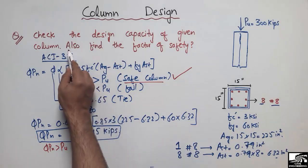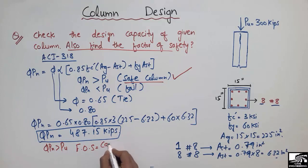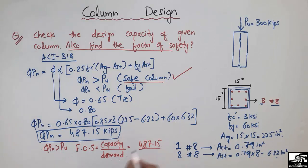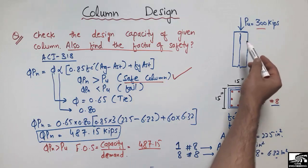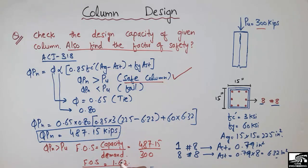Now we also need to find the factor of safety. The formula is: Factor of Safety = Capacity / Demand. The capacity is 487.15 kips and the demand is 300 kips. Dividing these two values, the factor of safety comes out to be 1.62.